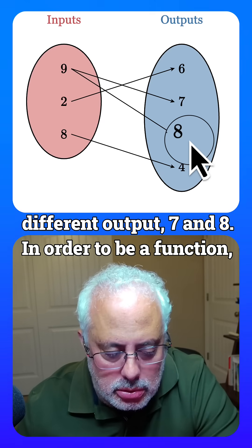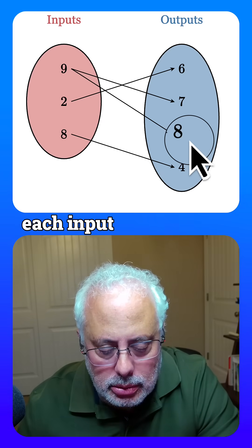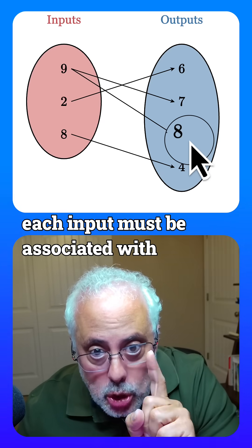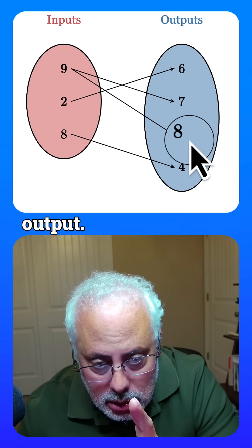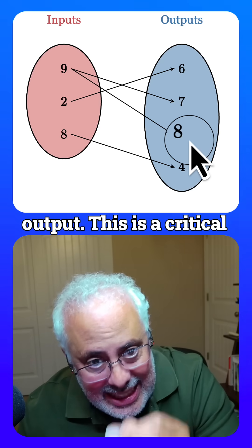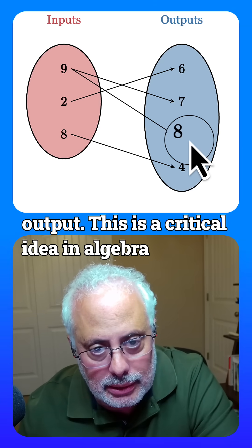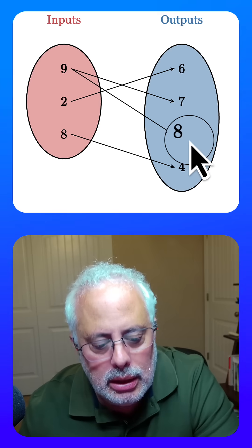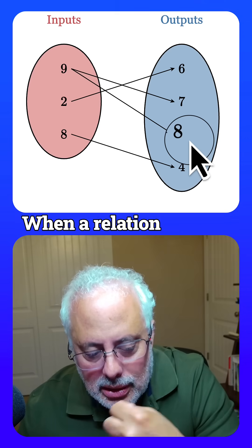In order to be a function, each input must be associated with only one output. This is a critical idea in algebra and in mathematics in general, when a relation is a function.